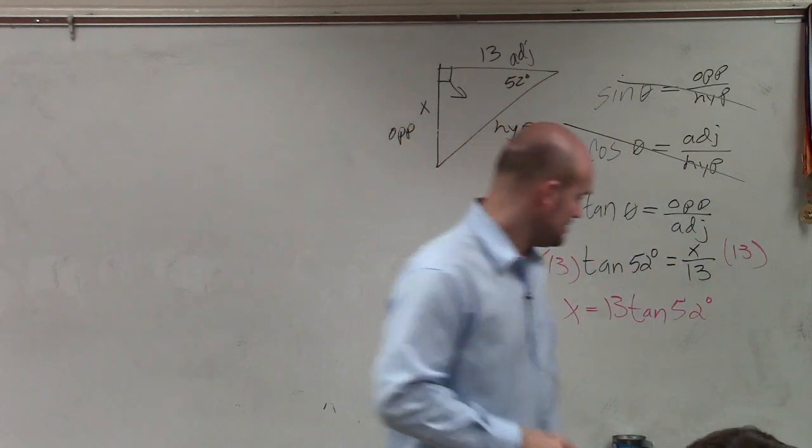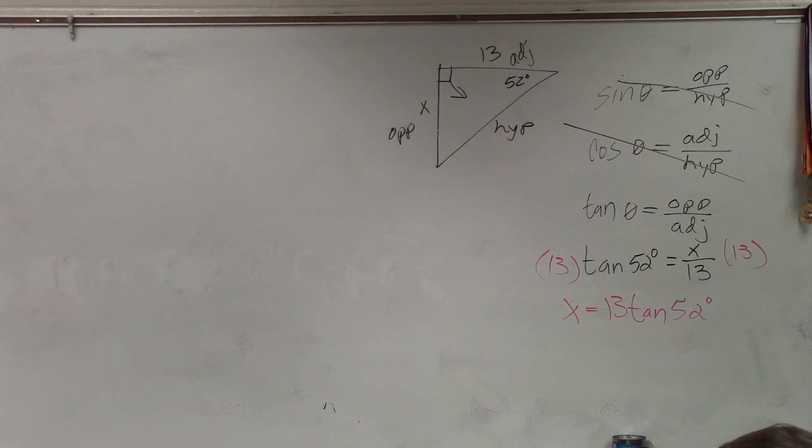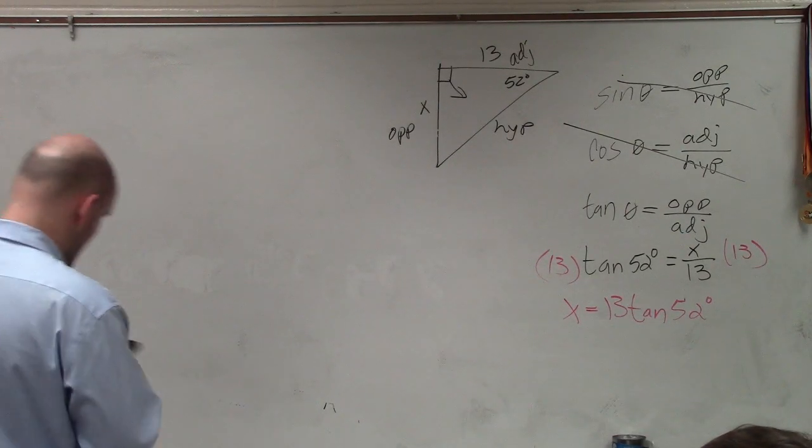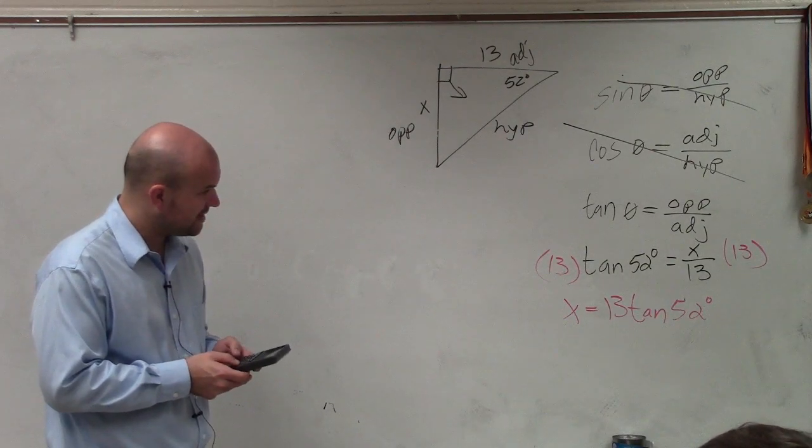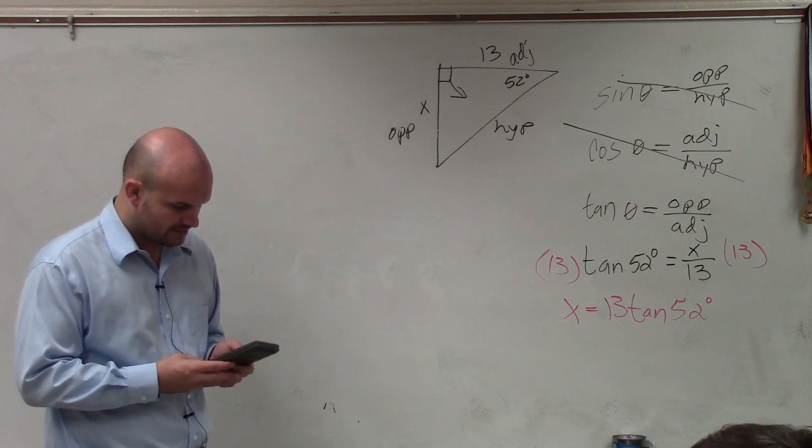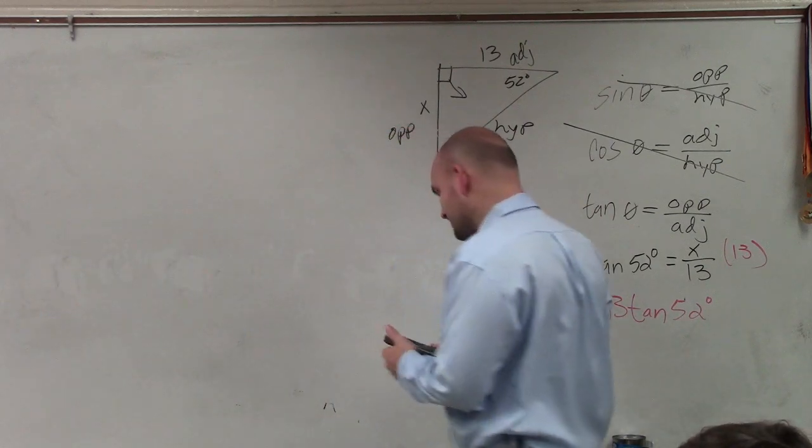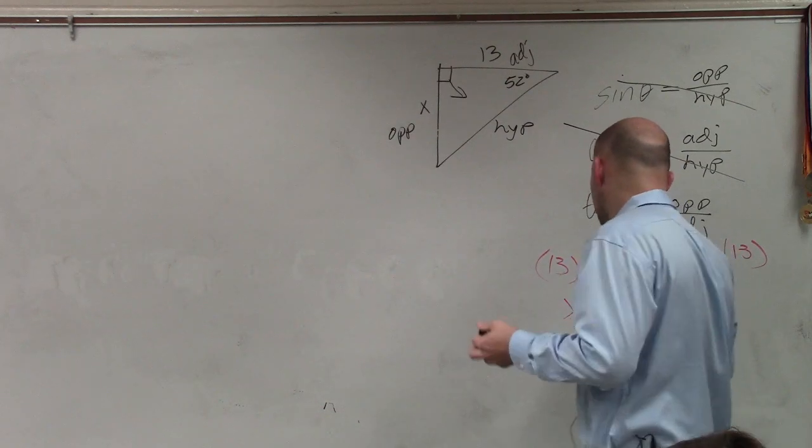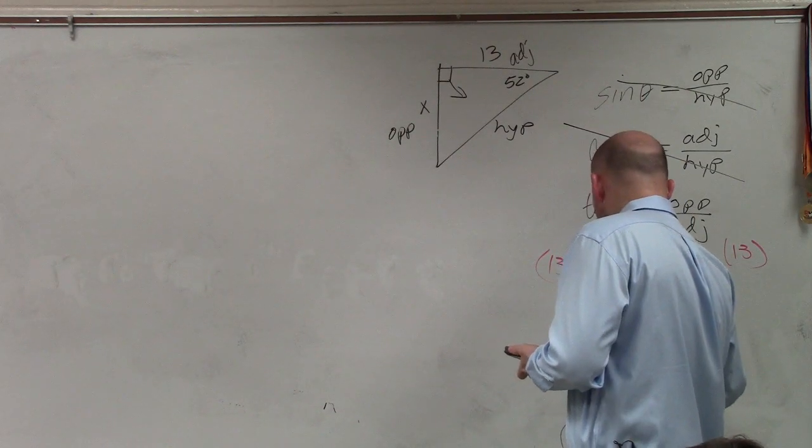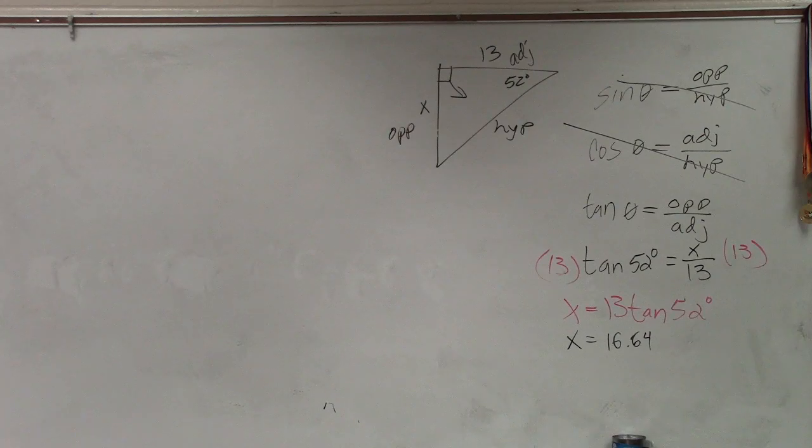So I need to go into my calculator. So now, I go ahead and plug into my calculator the tangent. Now, make sure your calculator is in degree mode. If you don't know, make sure you let me know, and I'll help you out with that. And then I just type in tangent or 13 times the tangent of 52. And I get 16.639. So I'll round to the hundredth. X equals 16.64. And there we go.